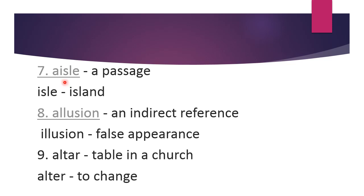Next, 'aisle' means a passage, and 'isle' means an island. Then 'allusion' means an indirect reference, while 'illusion' means a false appearance. Then 'altar' A-L-T-A-R means a table in a church, and 'alter' A-L-T-E-R means to change — like when you go for alteration of clothes, you want changes made.